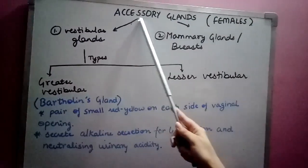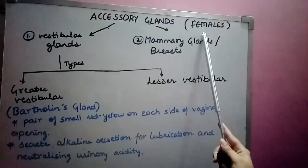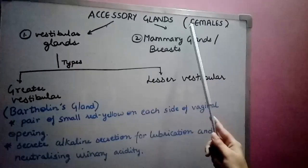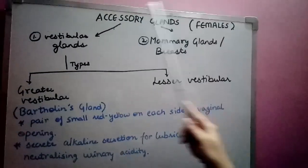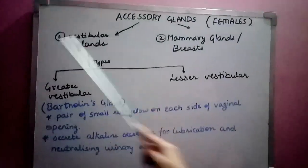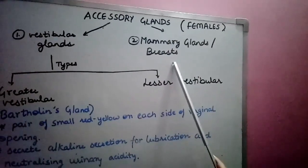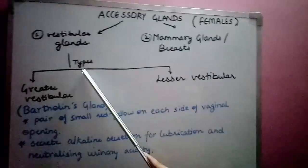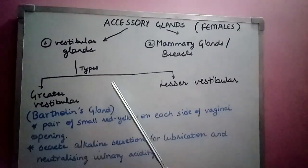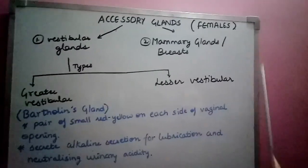Today we are talking about the accessory glands of females. There are two kinds of accessory glands in females: one is the vestibular gland, and one is the mammary gland, which is also known as breasts. Vestibular glands are of two types: the greater vestibular and the lesser vestibular.